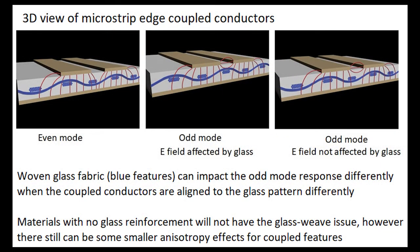Shown here are 3D images of a microstrip edge-coupled structure — it could be a section of an edge-coupled bandpass filter. I'm showing even and odd mode. In even mode, the fields are mostly using the Z-axis dielectric constant of the material. In odd mode, the fields also use the Z-axis, but additionally there are fields using the XY plane where they couple from one conductor to the other. In the middle picture, the electric fields are involved with the glass pattern, and glass does have a higher dielectric constant than the resin. In the far right picture, the conductors align to the glass pattern differently, and the electric fields are not in contact with the glass. So between those two odd-mode cases, there will be a difference in effective dielectric constant and phase response — due to the glass weave effect having influence on the coupled fields in some cases and not others.